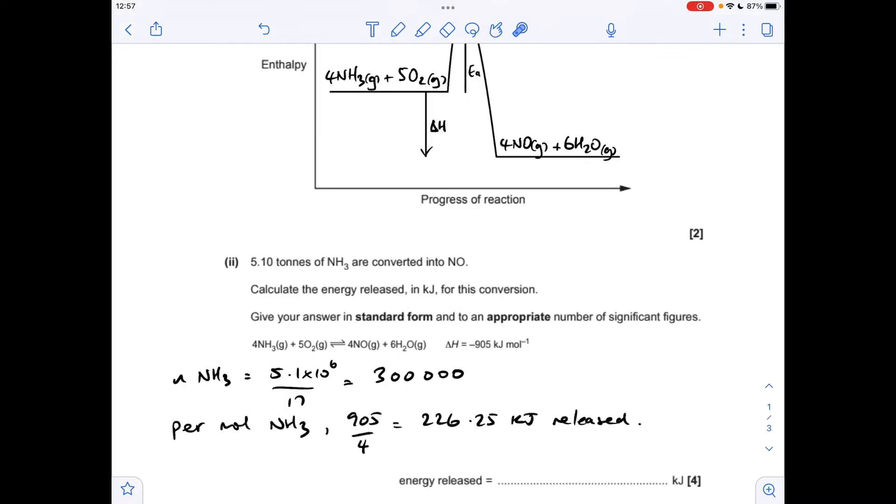So now we know the amount of energy released per mole of ammonia, we can multiply it by 300,000, and that will tell us how much is going to be released for the 5.1 tonnes, which in standard form to an appropriate three significant figures is 6.79 times 10 to the 7 kilojoules.